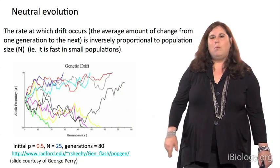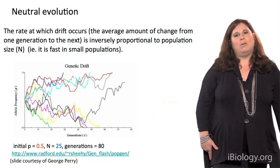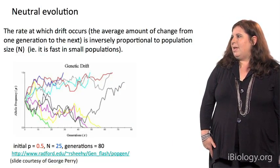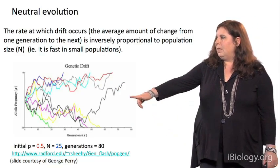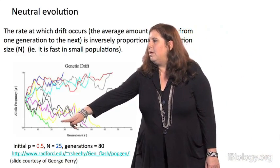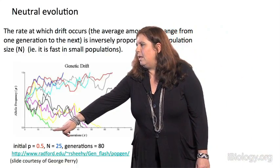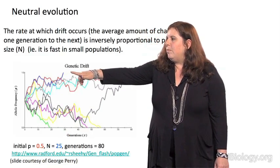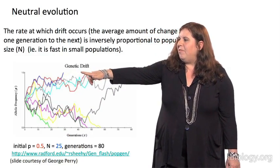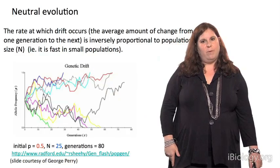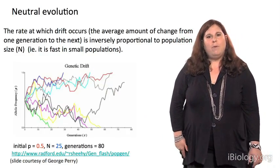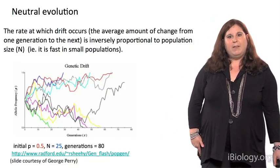Now, each of these lines here represents a different simulation. And what we can see is that, over time, alleles are either going to be lost from the population, or they're going to reach fixation, which means that they go to 100% frequency. And the rate at which this occurs is going to depend on the sample size.